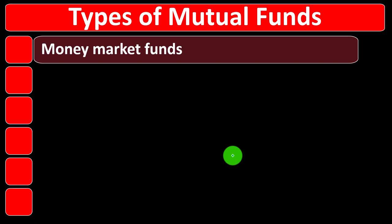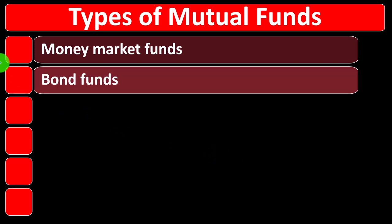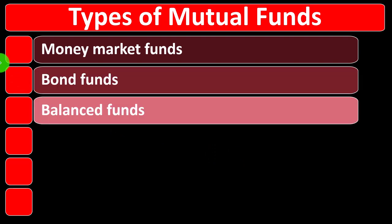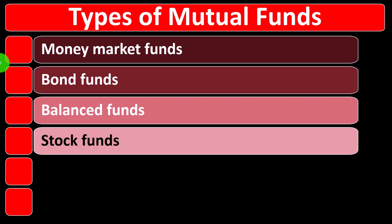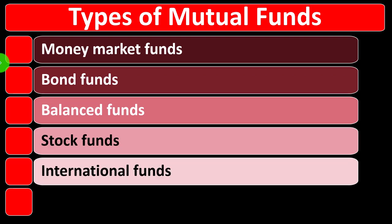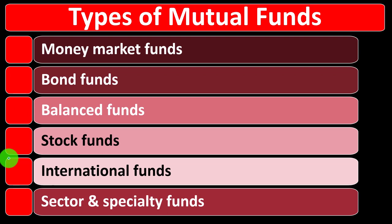We've been thinking about different categories and classifications of funds which could help us with our investment strategy, helping us to diversify our portfolio in a way that works best for us. Quick recap of the different kinds of funds: we've got money market funds, bond funds, balanced funds, and stock funds. Now we're taking a look at the international funds, and later we'll look at sector and specialty funds.